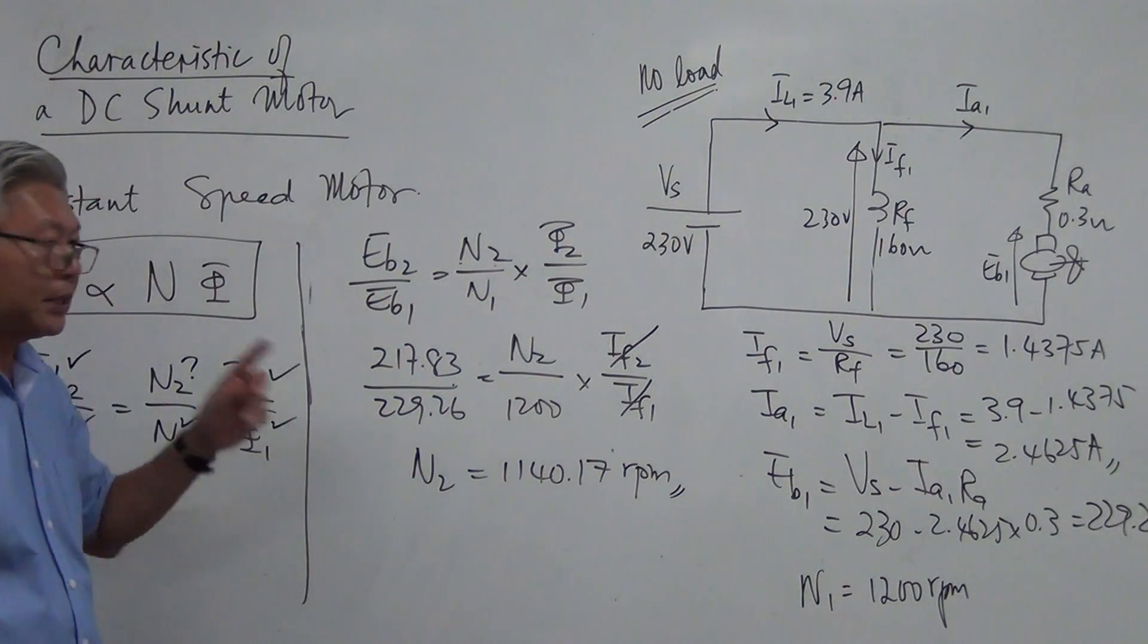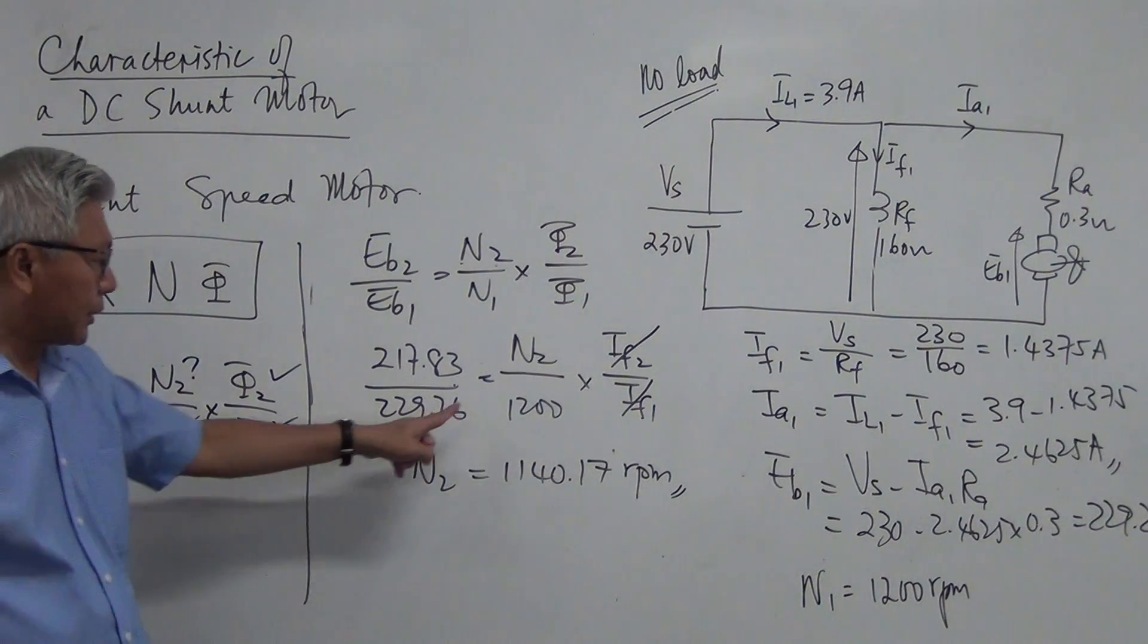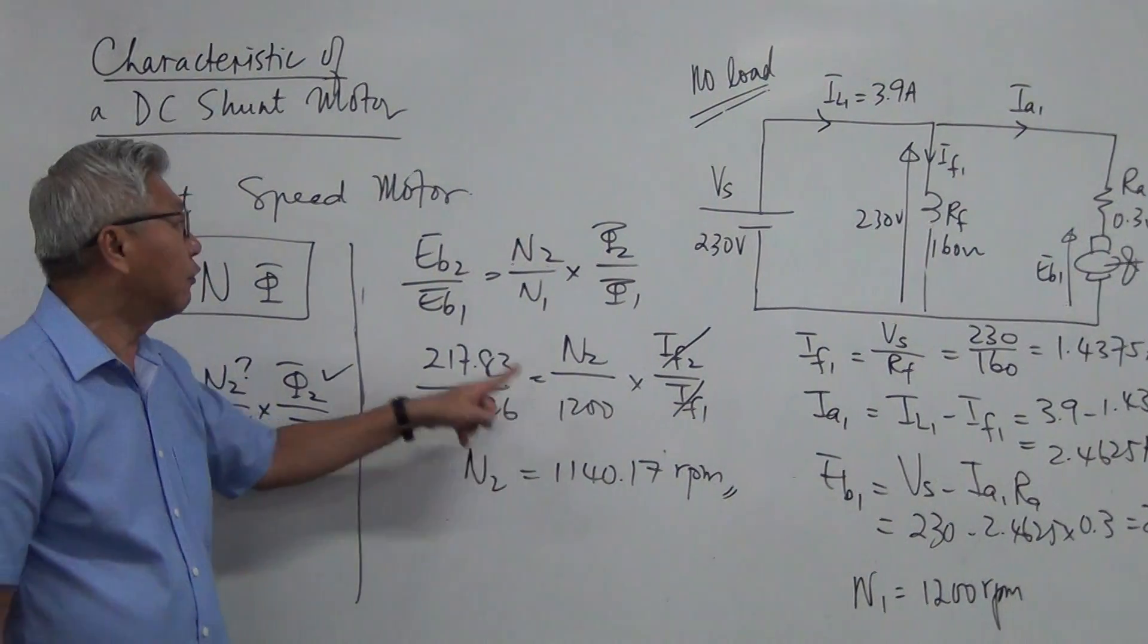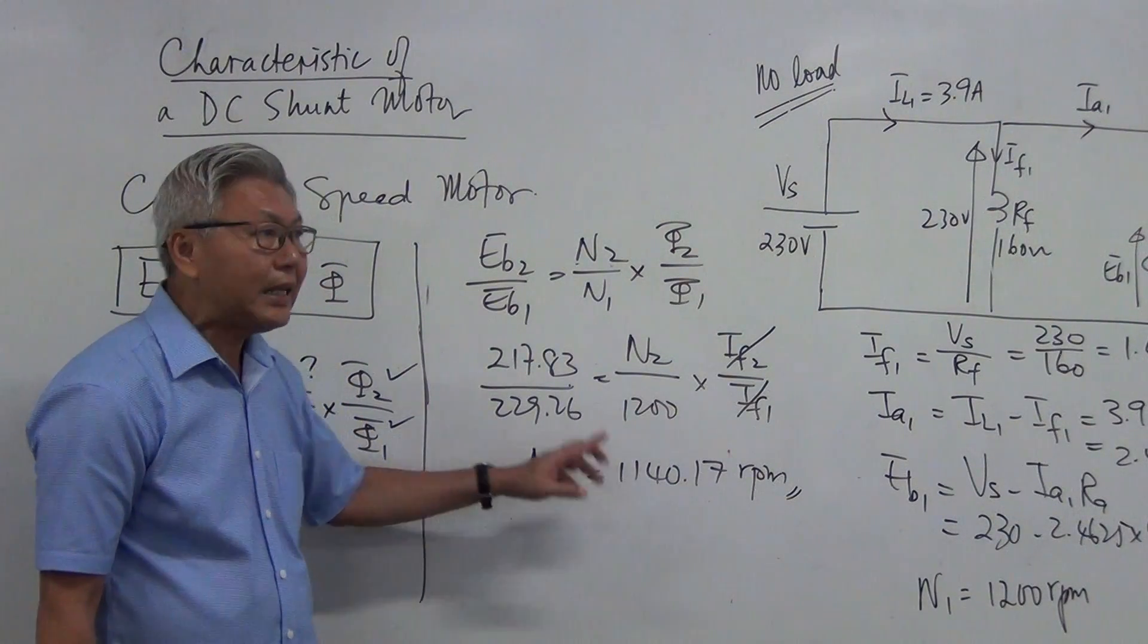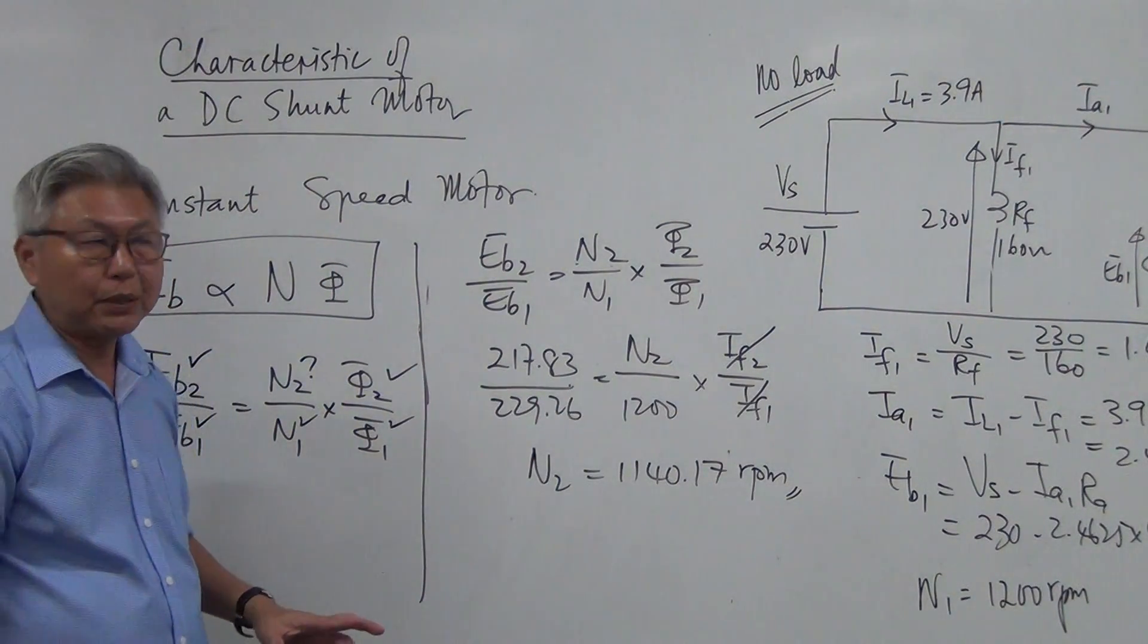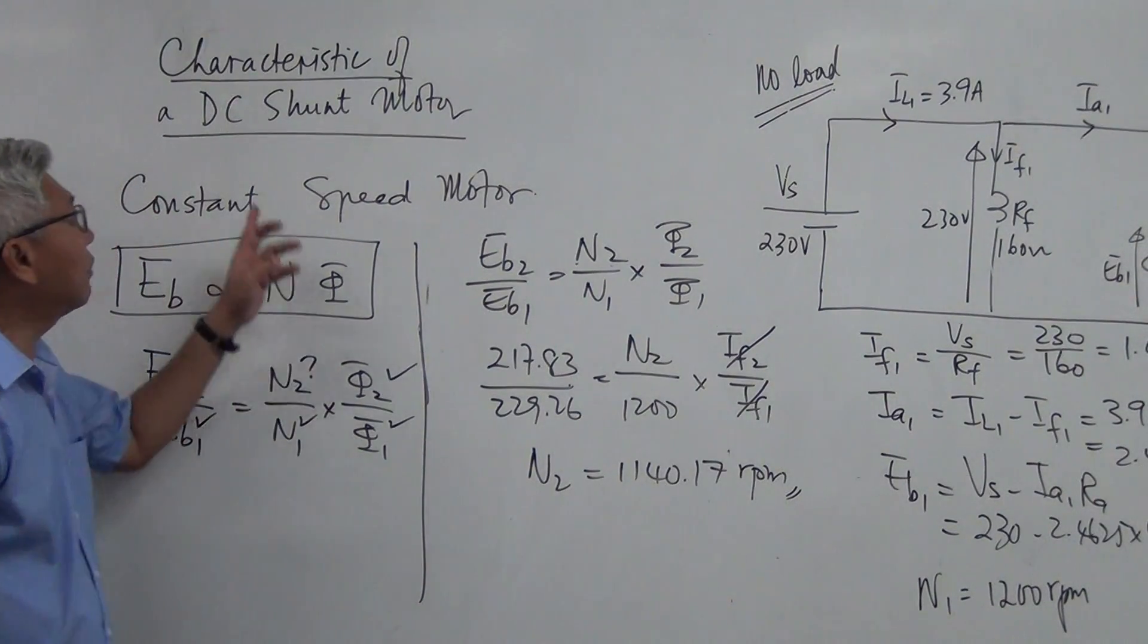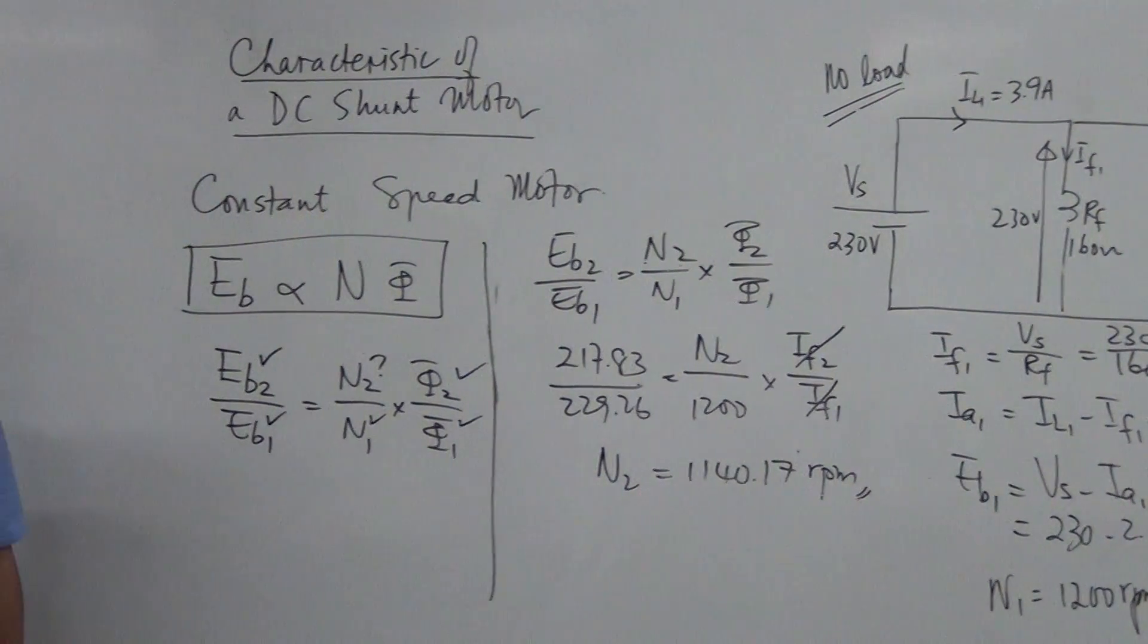So you can see from this example here, the original speed was 1200. Now with full load, the speed now is 1140. So that isn't much change in the speed, and that is the characteristic of the DC shunt motor.